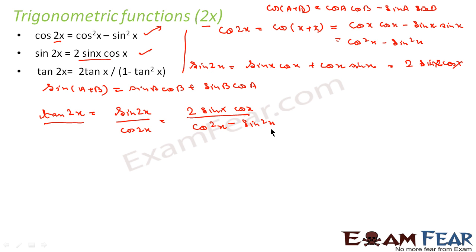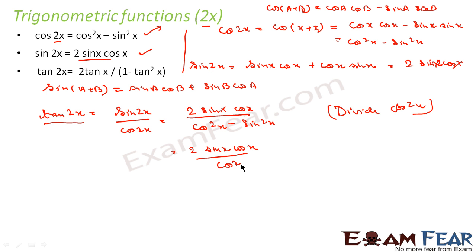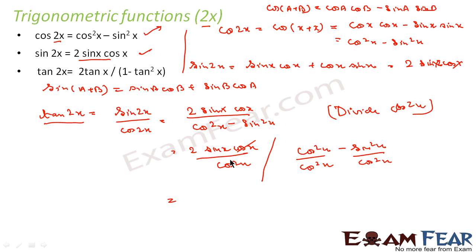We can observe that if we divide this by cos squared x, sin squared x becomes tan squared x; cos squared x divided by cos squared x becomes 1; and 2 sin x cos x divided by cos squared x — the cos squared x cancels — giving 2 sin x over cos x, which is 2 tan x. So we divide both numerator and denominator by cos squared x. What we get is 2 tan x divided by 1 minus tan squared x.